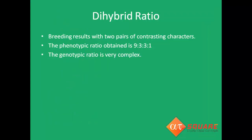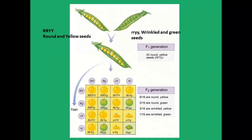Now we will discuss the dihybrid cross. It refers to crossing by taking two pairs of contrasting characters. The phenotypic ratio obtained is 9:3:3:1. The two pairs of contrasting characters here are seed color and seed shape. Round shape and yellow seed color are dominant over wrinkled seed shape and green seed color. In F1 generation, all round and yellow color seeds are obtained. In F2 generation: 9 out of 16 are round and yellow, 3 out of 16 are round and green, 3 out of 16 are wrinkled and yellow, and only 1 out of 16 is wrinkled and green.